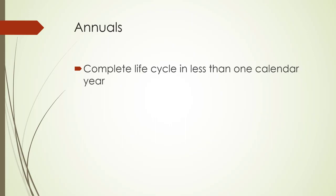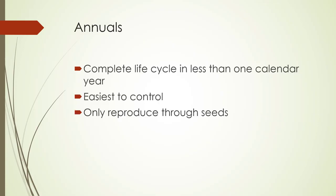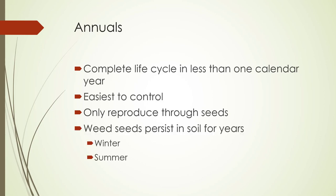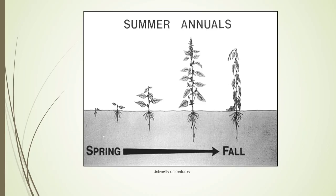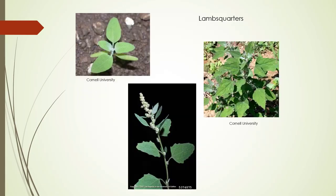Annuals complete their life cycle in less than one calendar year — really one growing season. This is the easiest to control because they only reproduce through seeds. Weed seeds do persist in soil for years. There are winter annuals and summer annuals. For a summer annual, in the spring you'll see the seedling come up, it'll grow, flower, go to seed, and then die back in the fall. Lamb's quarters is an example of a summer annual.